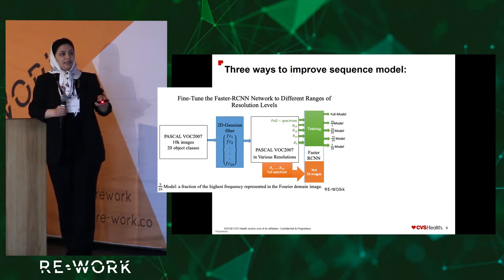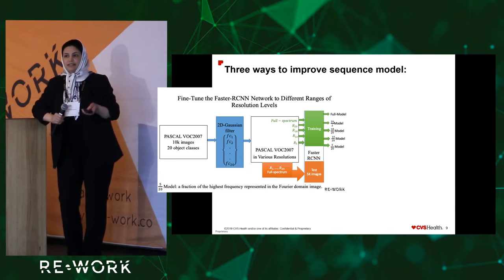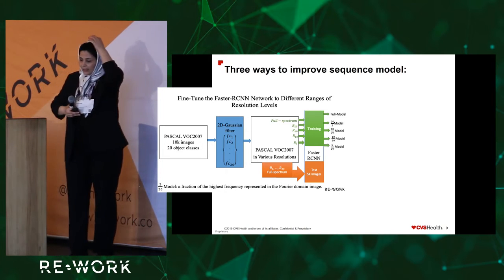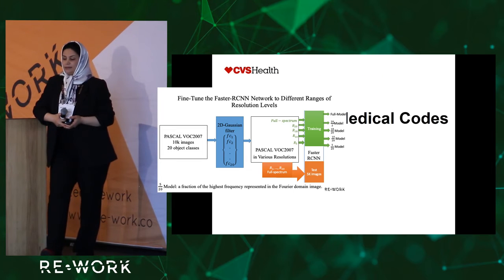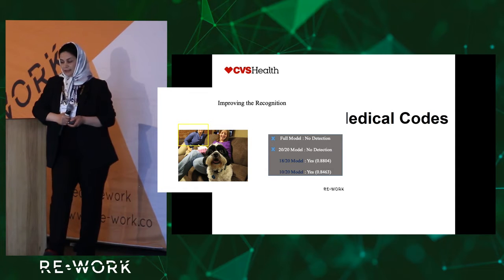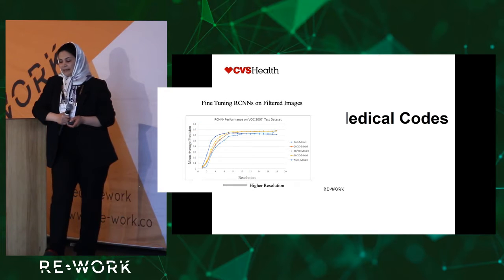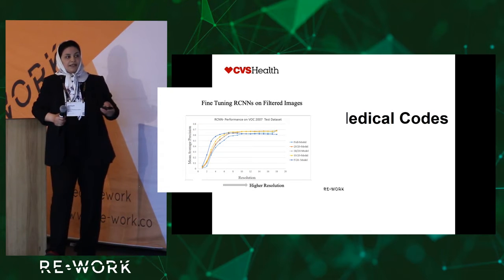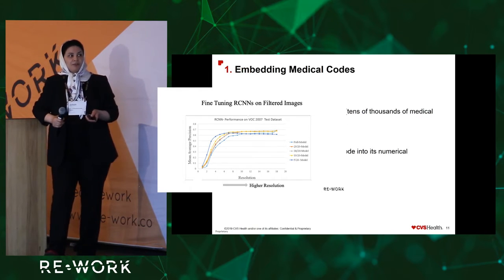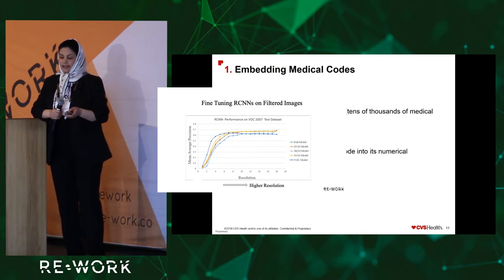The value shown next to each model represents the fraction of the highest frequency retained when filtering the original image. I would like to show the results for each individual network. The horizontal axis shows the resolution and the vertical axis shows the performance of Faster RCNN in terms of mean average precision.